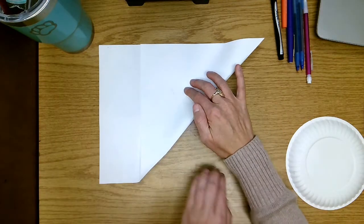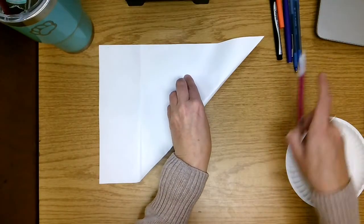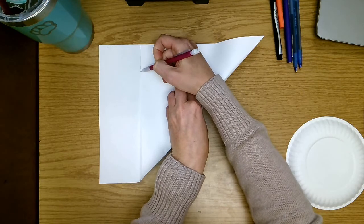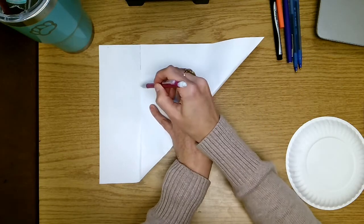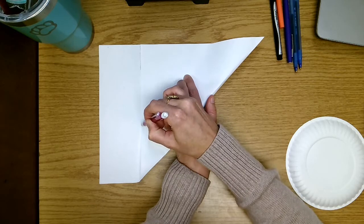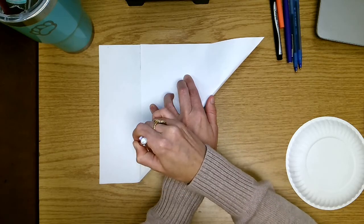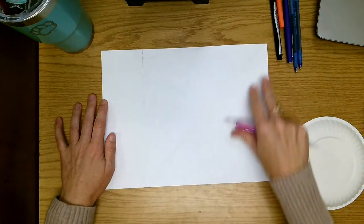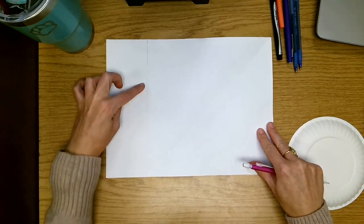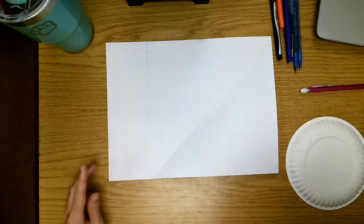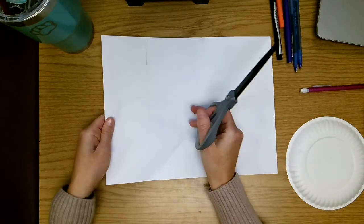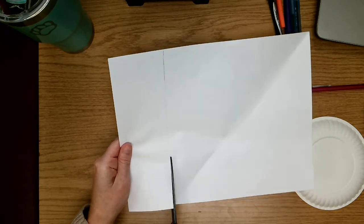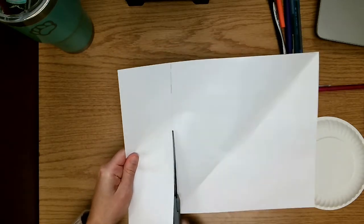I'm not even going to crease it all the way. What I am going to do is take my pencil and just go right along this line so I can get an idea of where I'm going to cut my paper. Now when I open this back up, I have a very light line and I'm going to grab my scissors and I'm going to cut right on this line that I just made, trying to keep it as straight as possible.